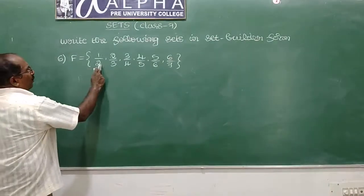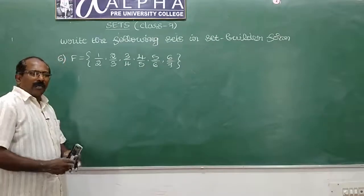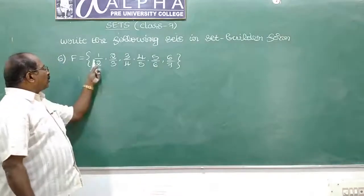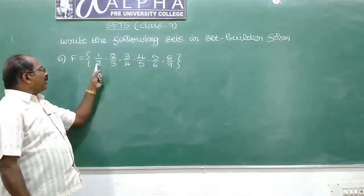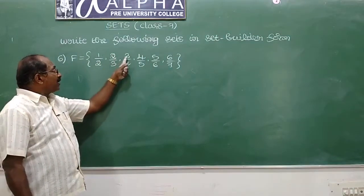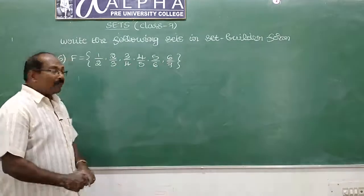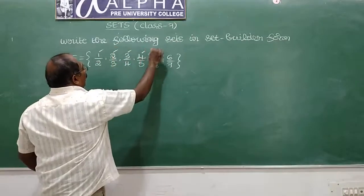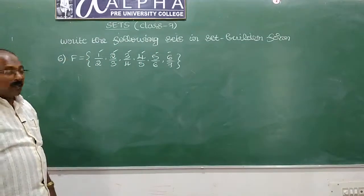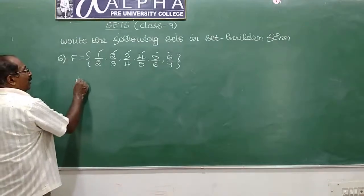Next question: F is equal to {1/2, 2/3, 3/4, 4/5, 5/6, 6/7}. The elements are fractions. Observe each fraction: the denominator is 1 more than the numerator. 1+1=2, 2+1=3, 3+1=4, 4+1=5, 5+1=6, 6+1=7. The numerators are 1, 2, 3, 4, 5, 6 — the first six natural numbers. So denominator is 1 more than numerator.